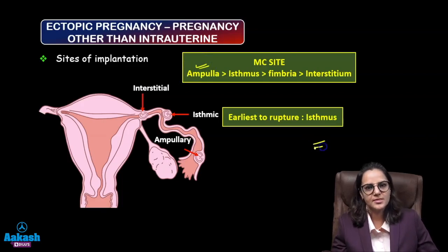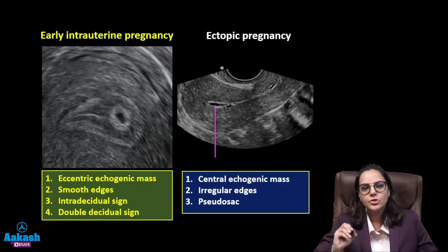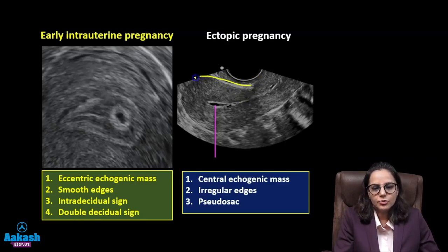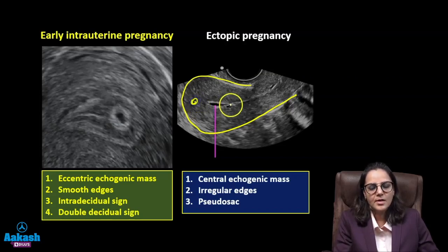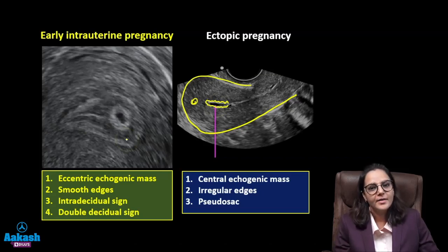Another important point about ectopic pregnancy: the most common site is the ampulla. The earliest to rupture is the isthmus because it is the narrowest portion. The pseudosac is the pathognomonic sign of ectopic pregnancy. On ultrasound, the pseudosac appears centrally located within the uterus — not eccentric — with irregular edges, as opposed to a normal intrauterine pregnancy.